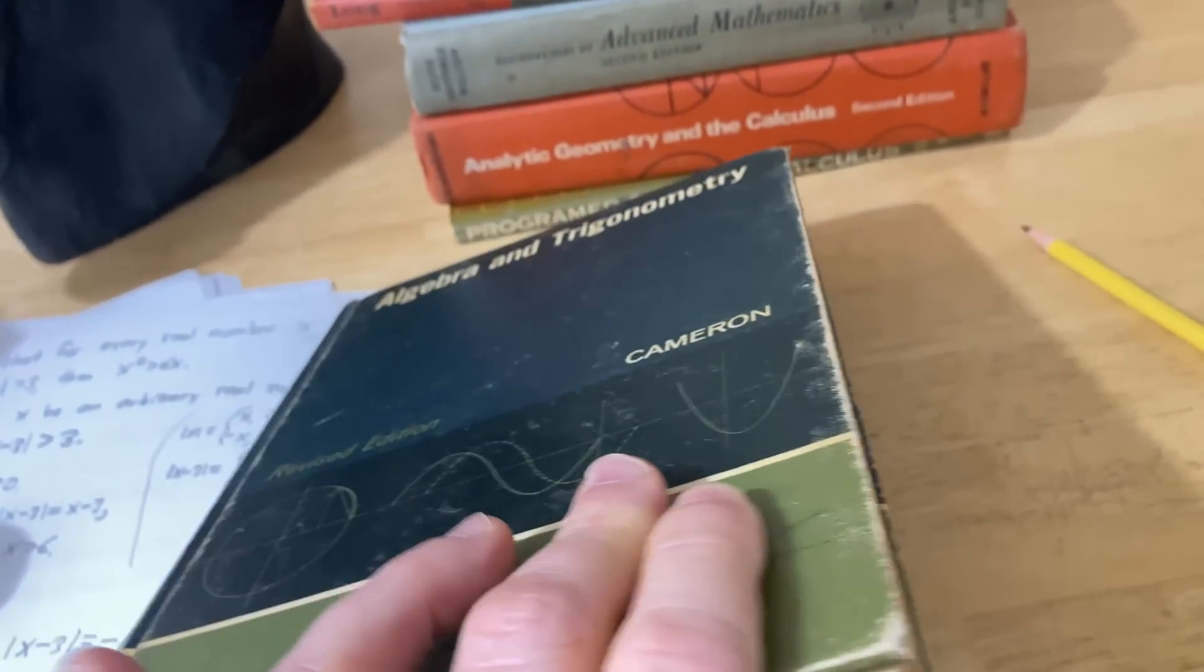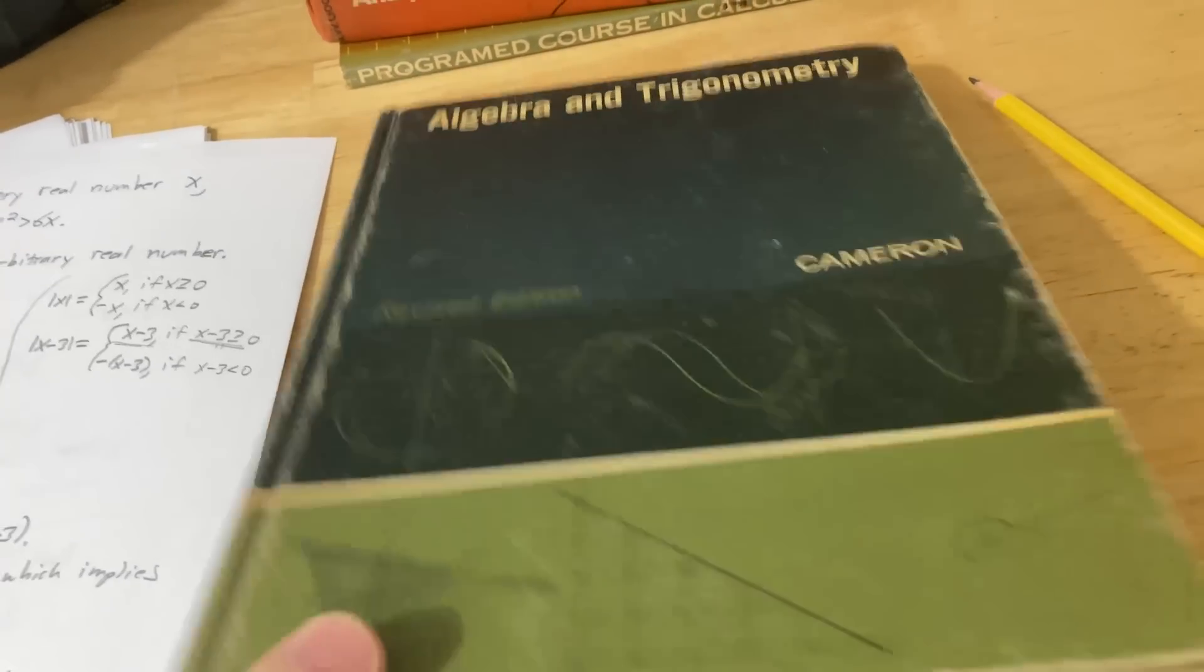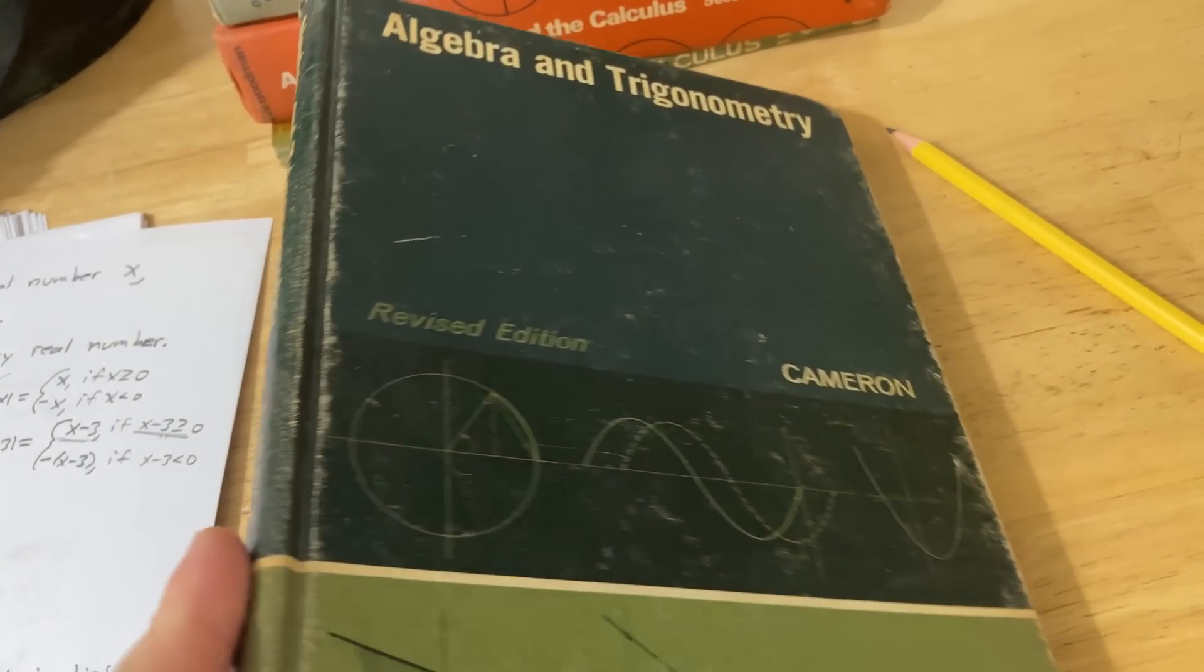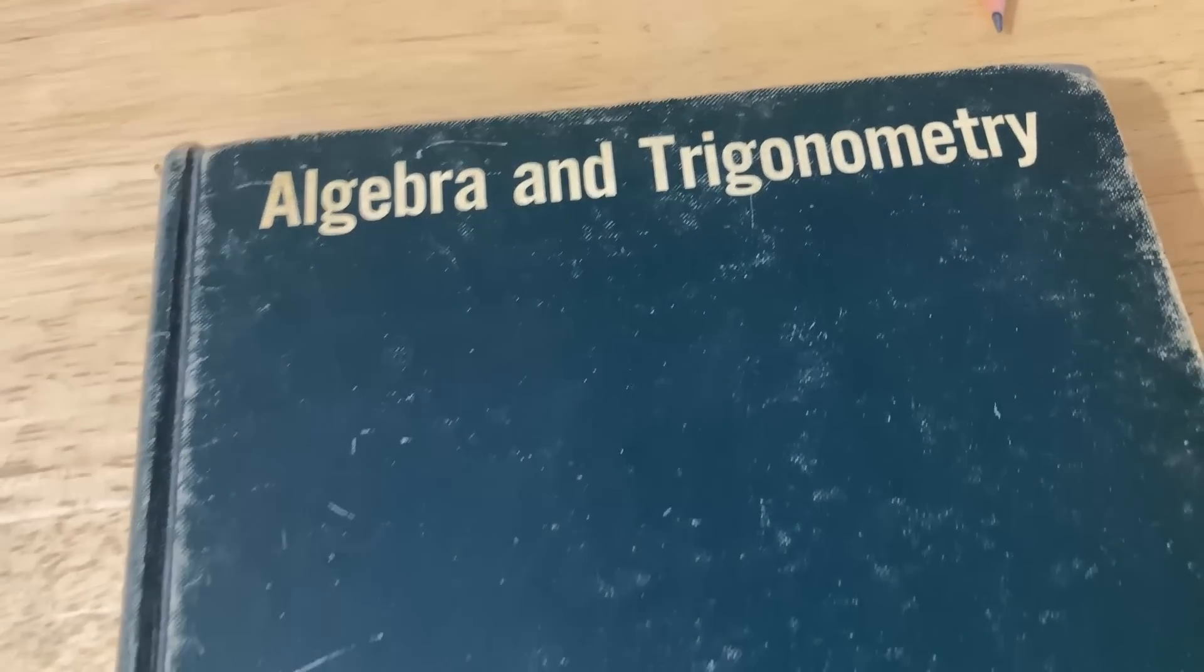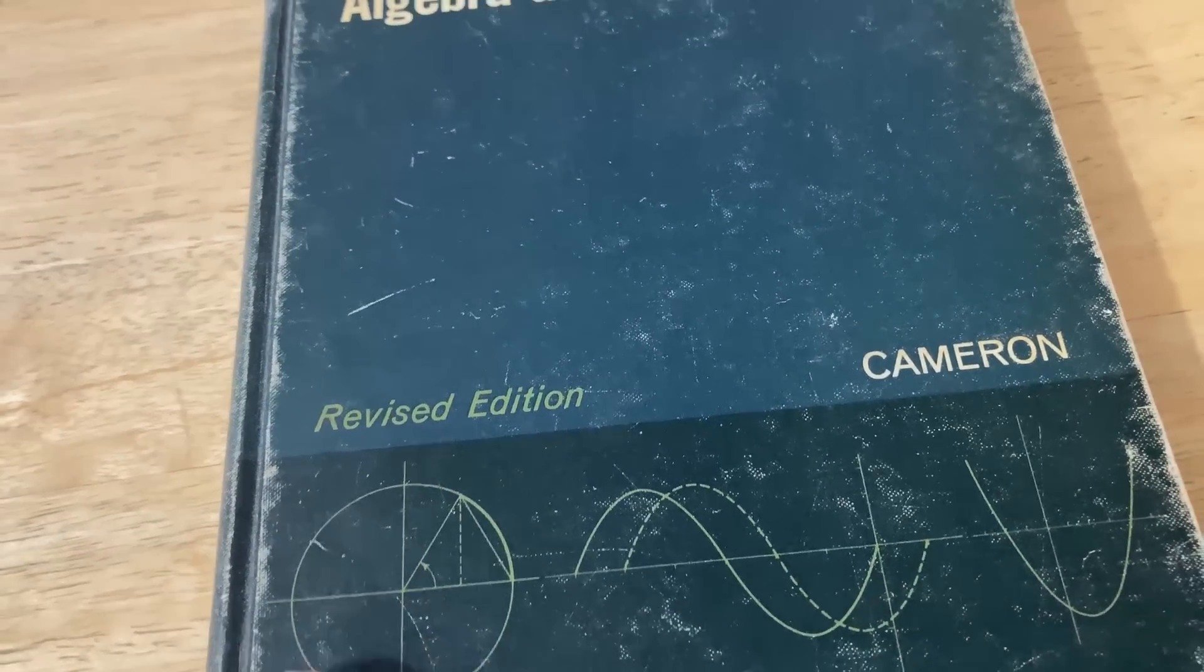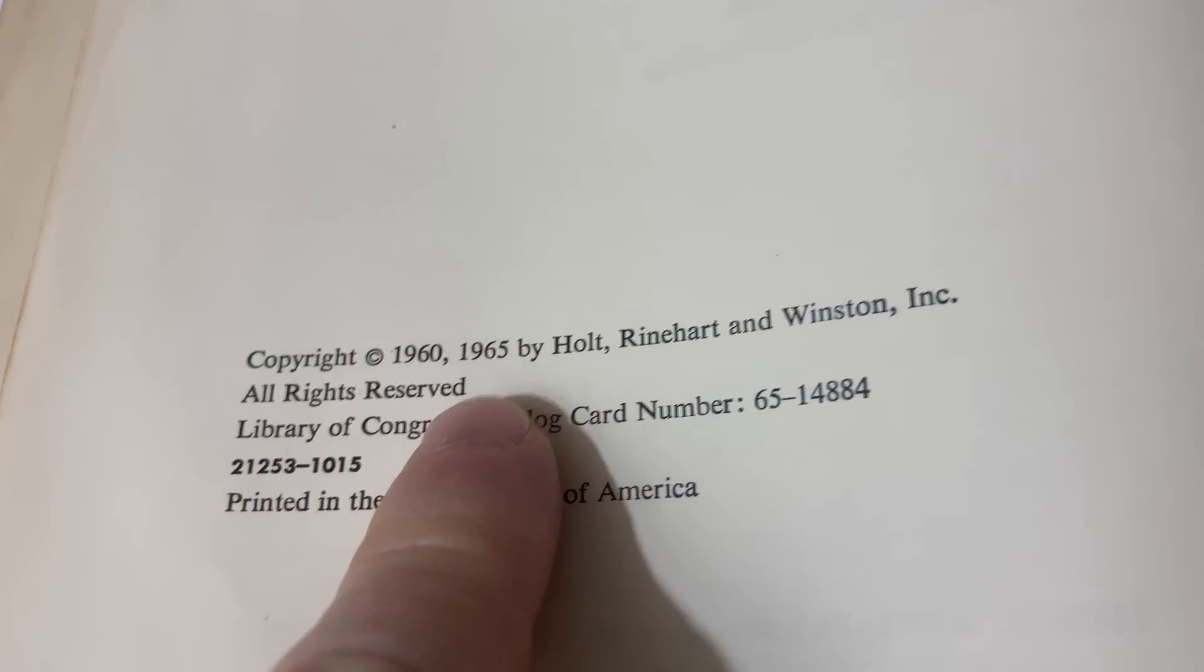So in this video, we're not really going to go through the entire book. Instead, I'm just going to show you briefly what this book covers. And then I found a problem and we're going to work through it. As the name implies, it covers algebra and trigonometry and was written by Cameron. This is the revised edition. I'm guessing this is the second edition, 1960, 1965. So very old book. January 1965, Chapel Hill, North Carolina.